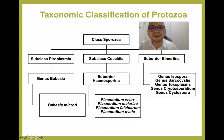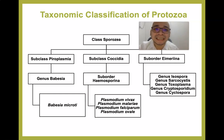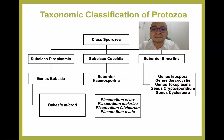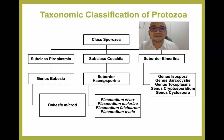The class Sporozoa does not have specific locomotory organelles. Under the subclass Pyroplasma we have the genus Babesia, with the most popular species being Babesia microti. Under the coccidian parasite suborder Haemosporina — named because they parasitize blood or red blood cells — we have the different species of malaria: Plasmodium vivax, P. malariae, P. falciparum, which is the most pathogenic, and P. ovale.